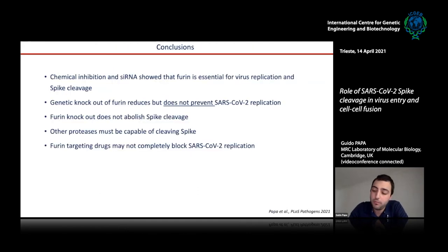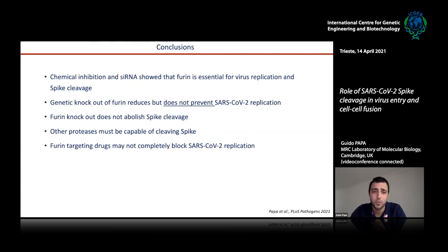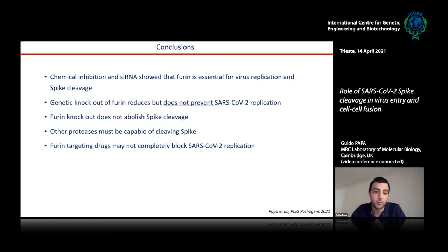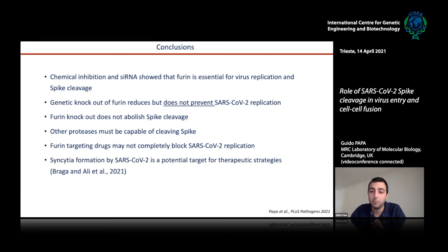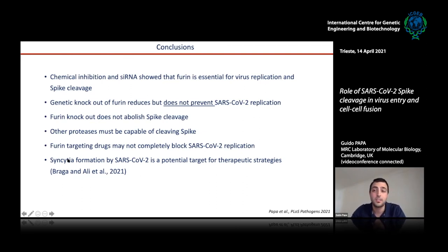In conclusion, we challenged the prevailing view that furin is essential for SARS-CoV-2 replication. Our genetic knockout data definitively shows that furin reduces but does not completely prevent SARS-CoV-2 replication, because other proteases can cleave the spike. This paves the way for using drug cocktails to inhibit replication, since furin-targeting drugs alone may not completely block SARS-CoV-2. We also showed that syncytia formation is a potential therapeutic target, as beautifully demonstrated by Luca and colleagues in a Nature paper from Mauro Jaka's lab.